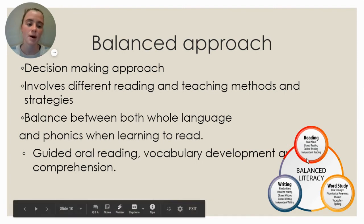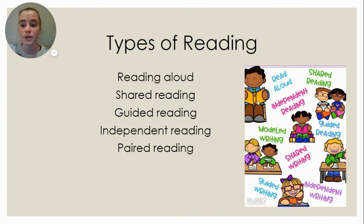We can see by this diagram over here that balanced literacy involves reading, writing, and word study. The types of reading that are found in the balanced approach are reading out loud, shared reading, guided reading, independent reading, and also paired reading.